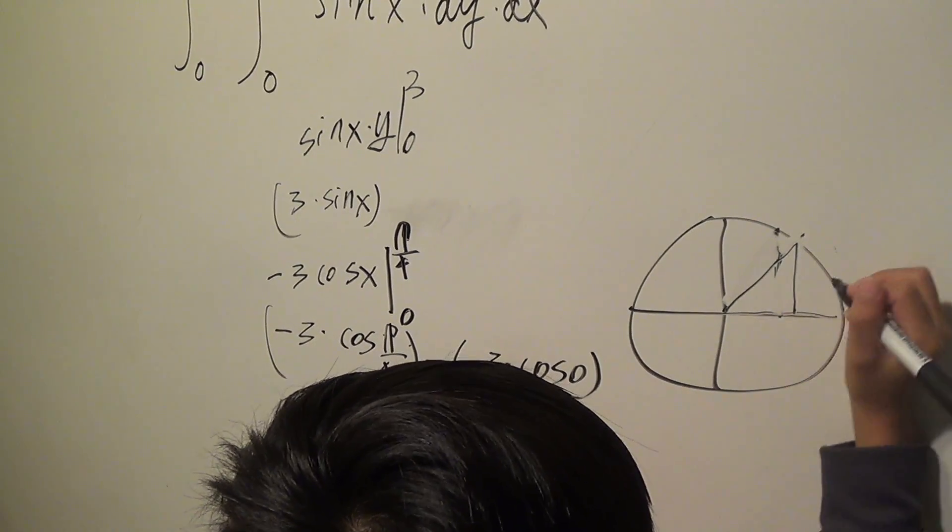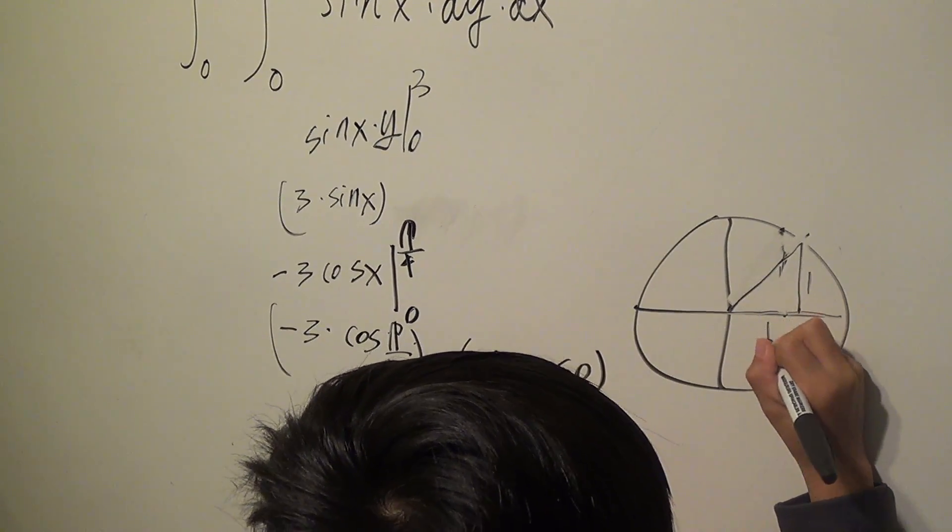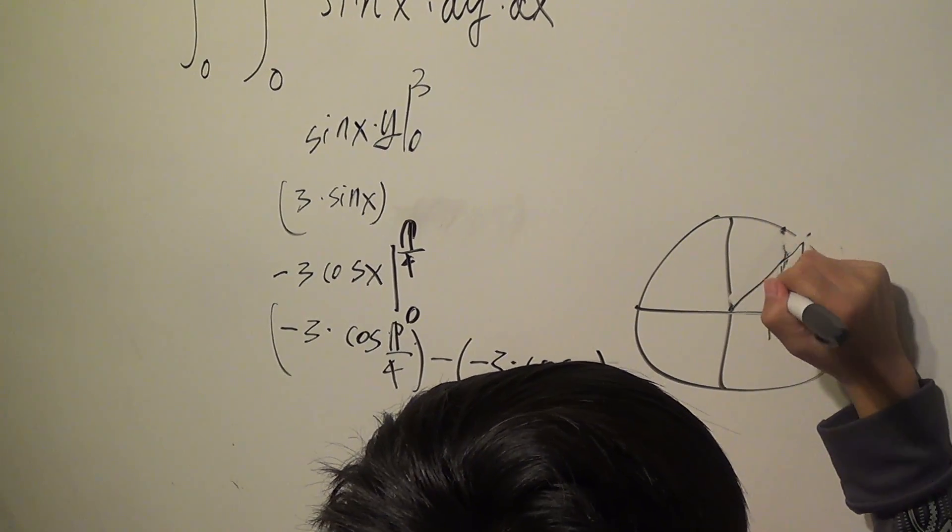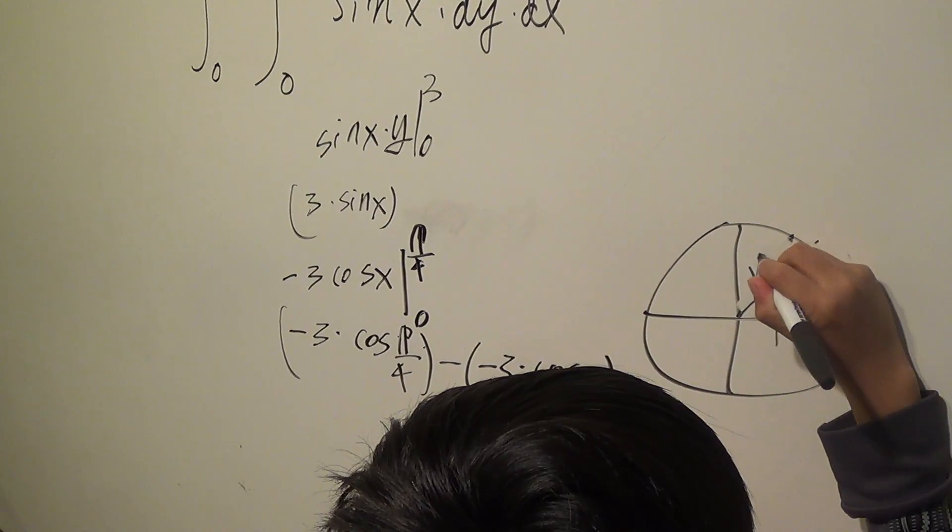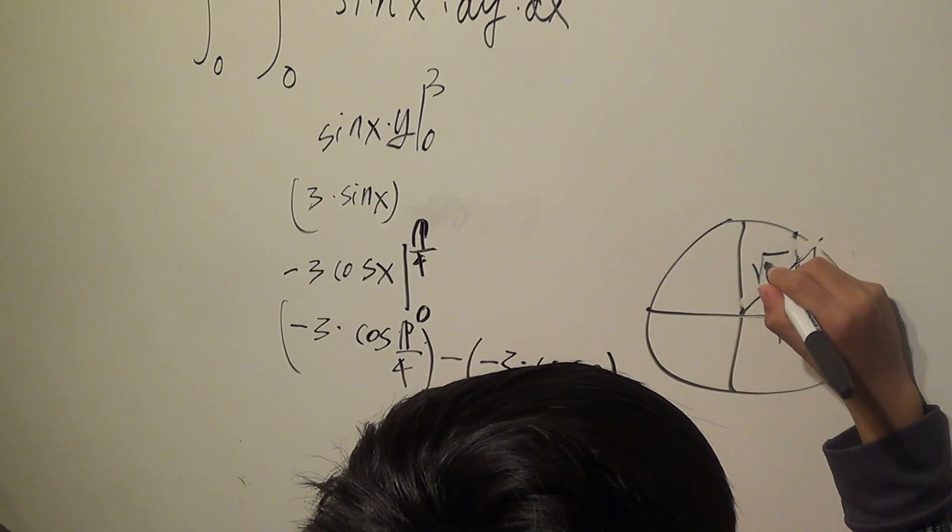This side and this side are pretty much the same, so they're 1 and 1, but this is a little bigger than this, so this would be square root of 2.